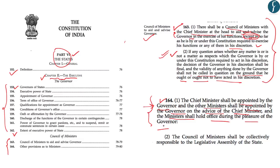Article 164(2) states that the council of ministers shall be collectively responsible to the legislative assembly of the state, which establishes the parliamentary system even at the state level. As far as appointment is concerned, the governor has the power to appoint anyone as chief minister, but the council of ministers headed by the chief minister must command a majority in the state legislature. In accordance with parliamentary conventions, the governor appoints the leader of the majority party. Where a single party obtains a majority, the governor straightaway appoints the chief minister.